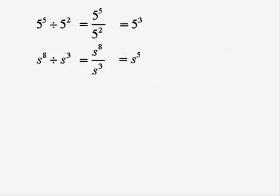Let's just leave that result for the time being and have a look at both results a little bit more closely. 5 to the 5 divided by 5 to the 2 turns out to be 5 to the 5 minus 2, giving us 5 cubed.